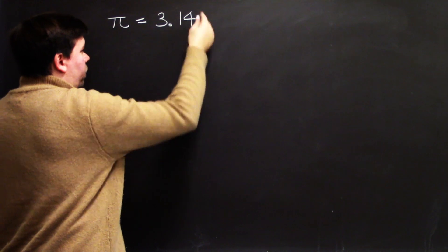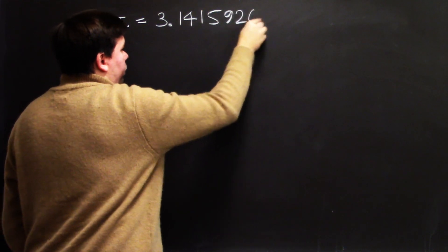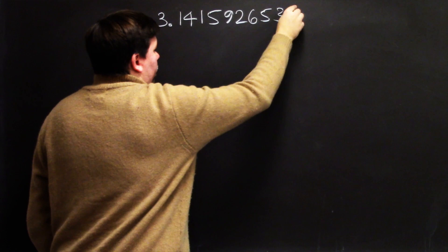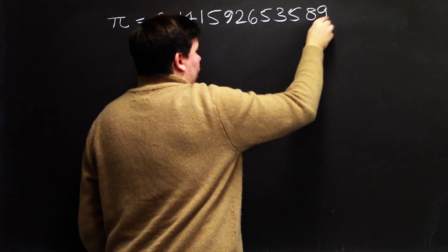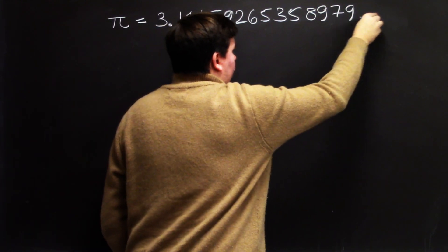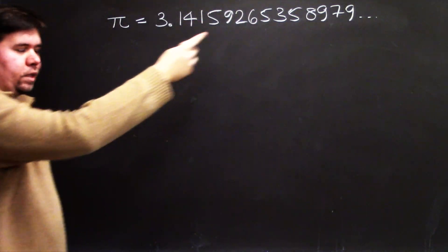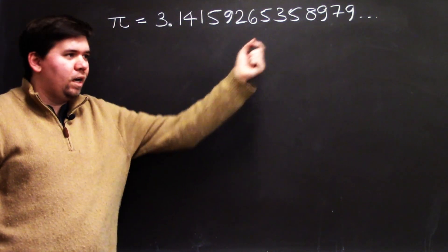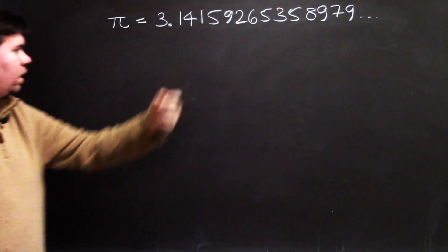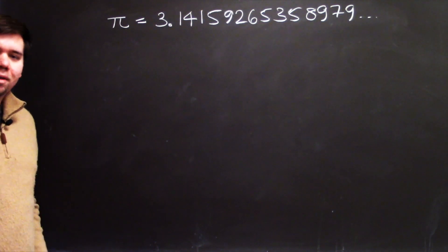so pi is 3.14159265358979, and on and on, 32384626433832795028, so on and on and on it goes. Okay, so this is pi, an irrational number,